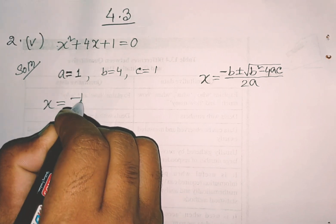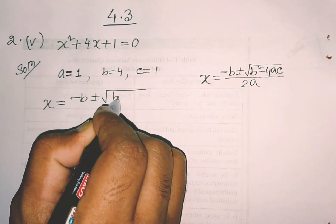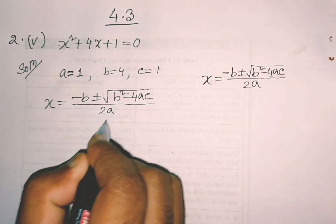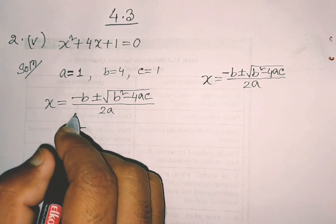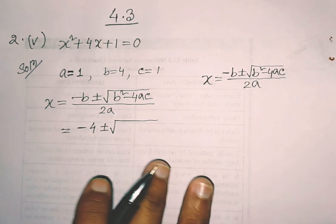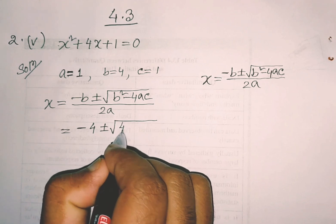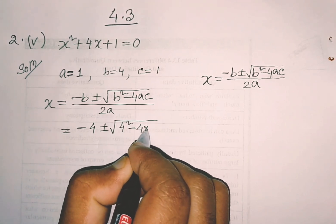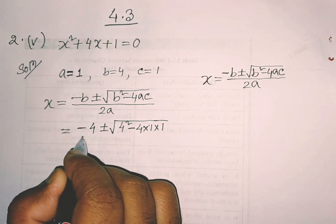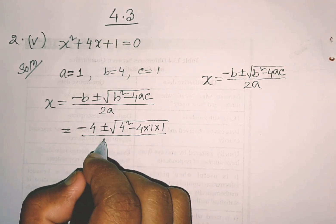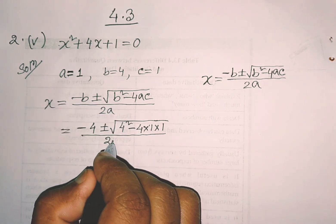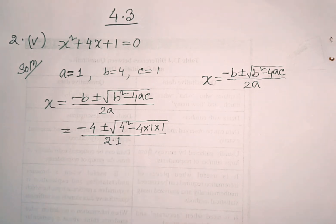x is equal to minus b plus or minus root over b square minus 4ac, divided by twice a — that is, 2 into 1.